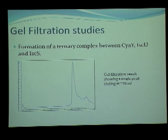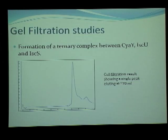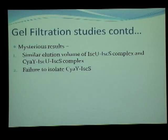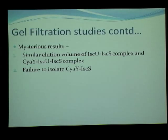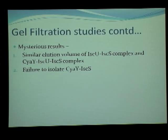We wanted to check whether a ternary complex was formed between CyaY, ISCU, and IscS. We carried out a gel filtration study and a single peak was observed, showing that the complex is formed — it eluted at 70 ml. However, we also obtained some mysterious results requiring further experimentation. We observed a similar elution volume for the IscS-ISCU complex as well as the CyaY-IscS-ISCU ternary complex, though CyaY is around 10 kDa so a difference should have been resolved. Additionally, we failed to isolate the CyaY-IscS complex — we obtained two separate peaks rather than one, even though it should have approximately the same affinity as ISCU-IscS. Further experimentation is needed.